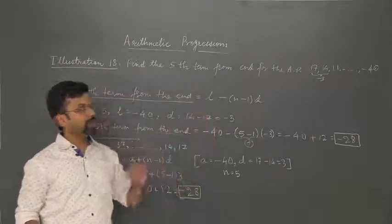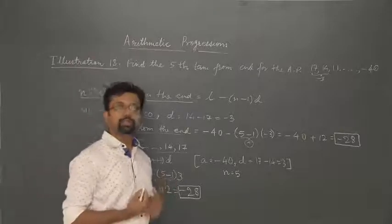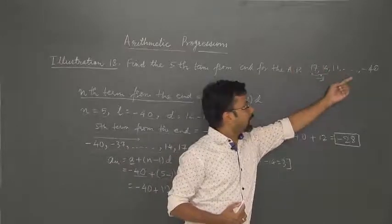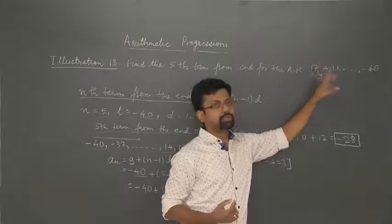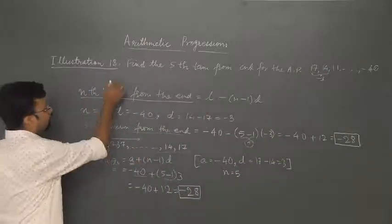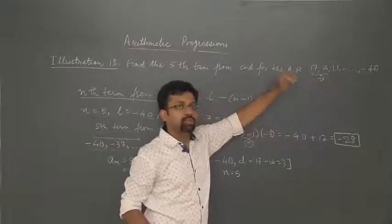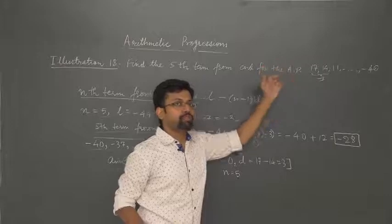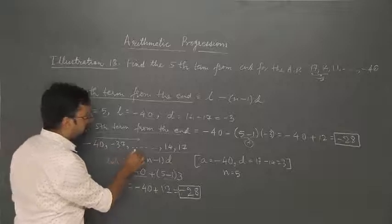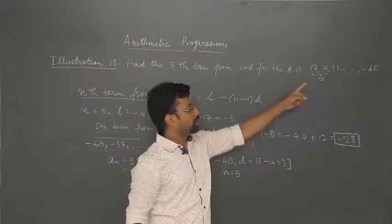So the fifth term from the end for the given AP is minus 28. There is another way to approach this problem. The given AP can be rearranged — we can write the last term as the first term, reversing the order of the terms. It will still be an AP. The fifth term from the end for the given AP will equal the fifth term from the start for the reversed AP.